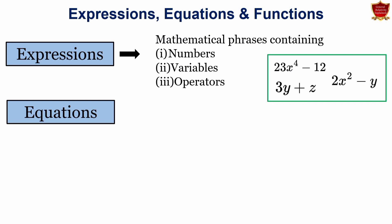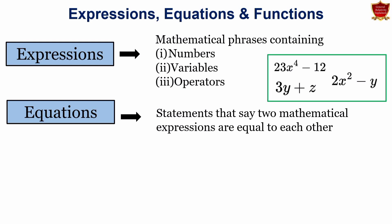Equations are statements that say for example, two mathematical expressions are equal to each other. For example, we can combine these various expressions to obtain an equation. So for example, 3z plus 7 equals to 2x squared minus 1.